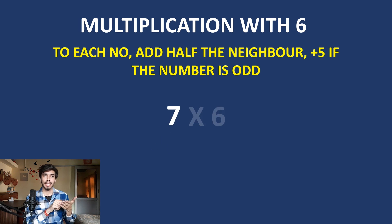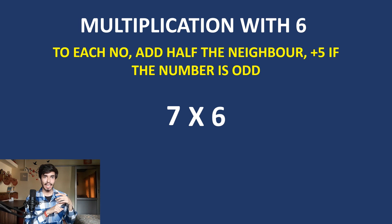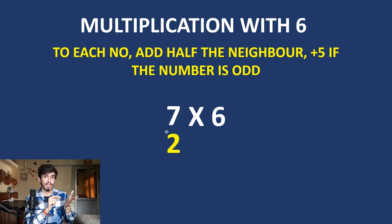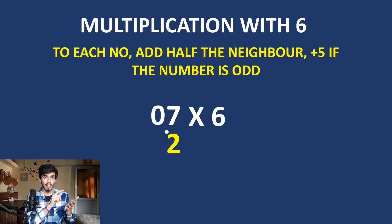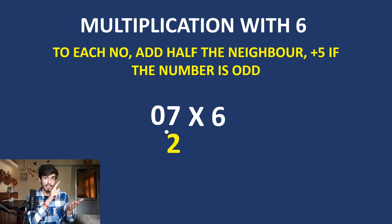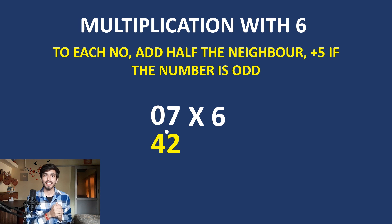Try 7 times 6. 7 is odd and has no neighbor, so just add 5 to it: 7 plus 5 is 12. Write 2 and put a dot for the carry. Then for the leading 0: half of 7 is 3, plus the carry of 1 is 4. So 7 times 6 equals 42. We know that from the tables, but now we are calculating it from the key.